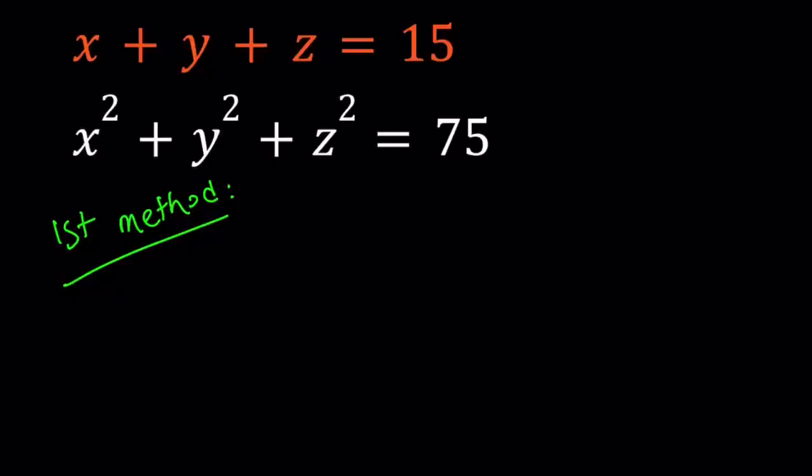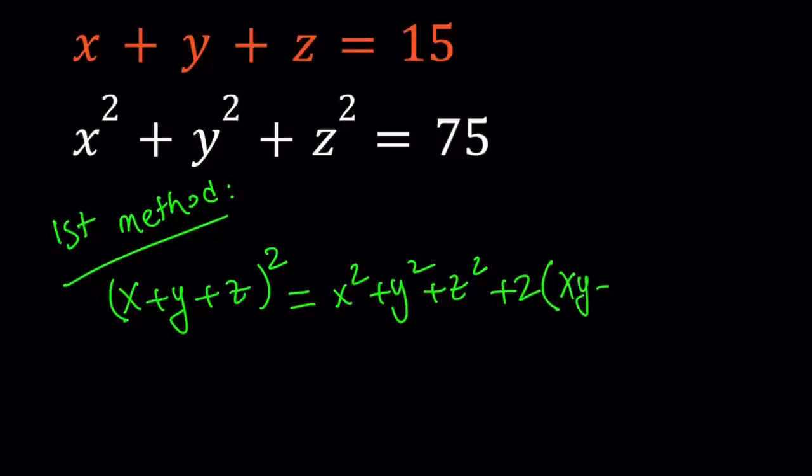For my first method, I'm going to use what is commonly known as algebra and square the first equation. Because we have the sum of squares, so it only makes sense to square x plus y plus z. When you square x plus y plus z, you get the following: x squared plus y squared plus z squared. And then you get the two xy, the two xz, and the two yz, which you can write with a common factor of 2 times xy plus xz plus yz. So this is an identity.